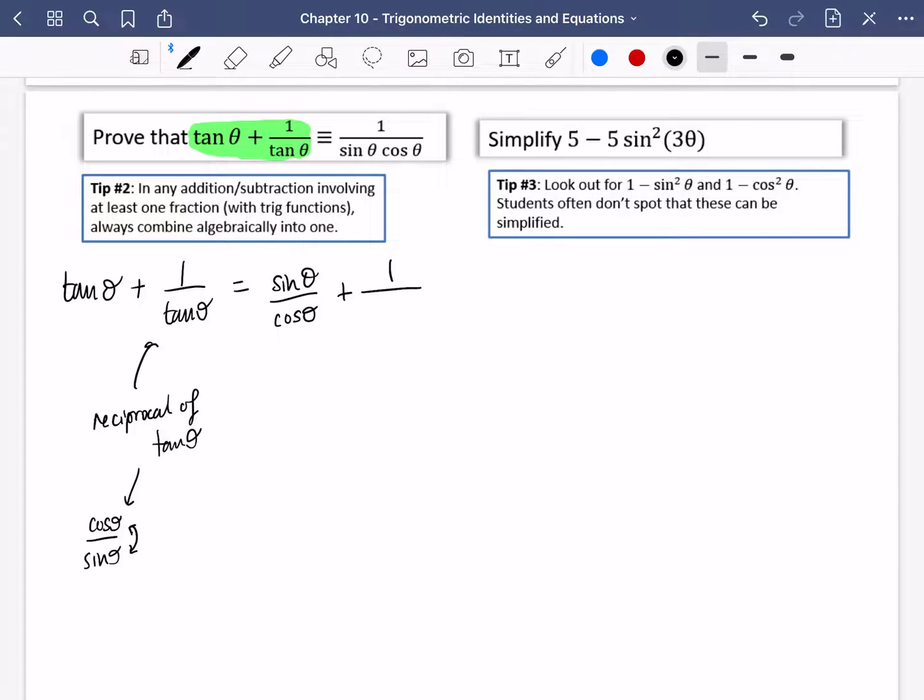The longer way would be doing 1 over sin θ over cos θ and then multiplying this by cos θ and this by cos θ to get rid of the fraction within the fraction. But instead, we just know it's the reciprocal of tan θ. So I'm going to replace this with cos θ over sin θ. Okay, here's my tip again. I'm going to actually add these together. I'm going to add these two fractions. Now they don't have a common denominator, so I need to make a common denominator of sin θ cos θ.